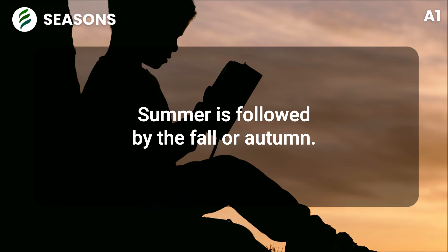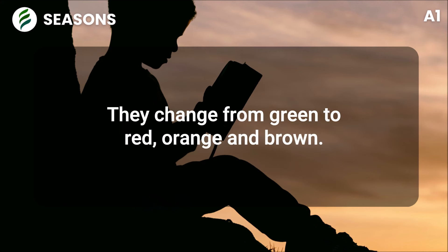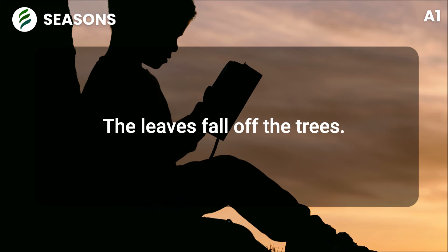Summer is followed by the fall or autumn. The leaves on the trees change colors. They change from green to red, orange and brown.